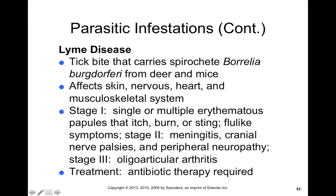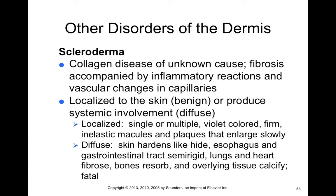Scleroderma is a collagen disease of unknown cause. It involves fibrosis accompanied by inflammation, and you get vascular changes as well. It can be localized to the skin, or it can also lead to systemic involvement. When localized, it causes single or multiple violet-colored firm inelastic macules and plaques. When diffuse, the skin hardens like a hide, the esophagus and GI tract become semi-rigid, the lungs and heart also become fibrotic, and bones resorb while overlying tissues calcify — in this sense, it'll eventually become fatal.